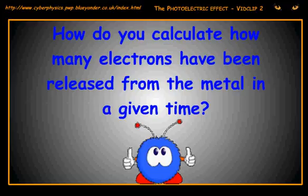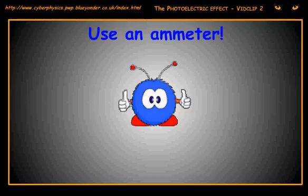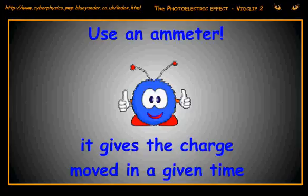How do you calculate how many electrons have been released from the metal in a given time? You calculate how many electrons have been released in a given time by using an ammeter to find the charge moving in a given time.